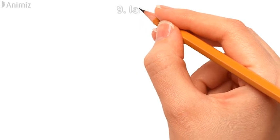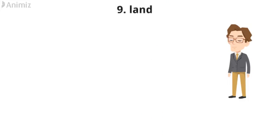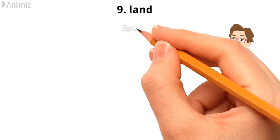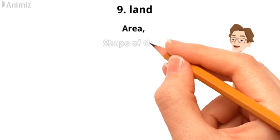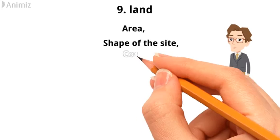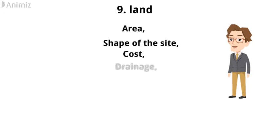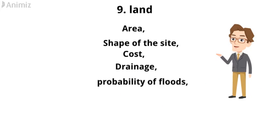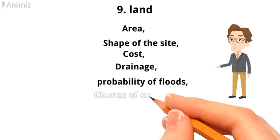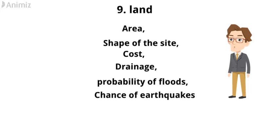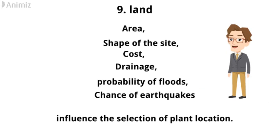Number 9: Land. Area, shape of the site, cost, drainage, and other facilities — the probability of floods and chance of earthquakes — influence the selection of plant location.